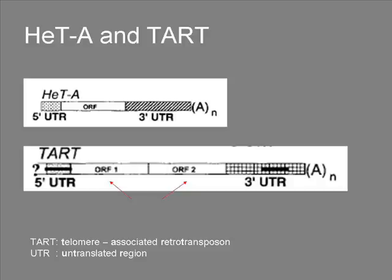This element is also flanked by a 5' UTR and a large 3' UTR. These two elements transpose to the ends of chromosomes, and thereby counterbalance terminal DNA loss from chromosomes. What is unusual about these LINEs is the long 3' UTR — about half of their sequence is non-coding due to this UTR.